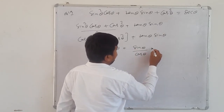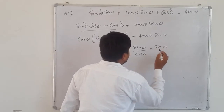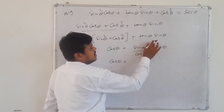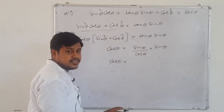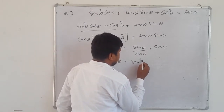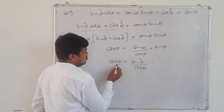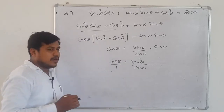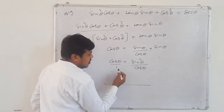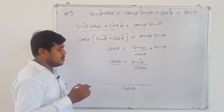Now change tan θ to sin θ/cos θ, because we have no other option. Then sin θ × sin θ/cos θ = sin²θ/cos θ. Now different denominators — take LCM. LCM of 1 and cos θ is cos θ. Cos θ divided by 1 gives cos θ; cos × cos = cos²θ.